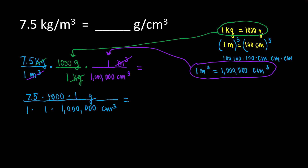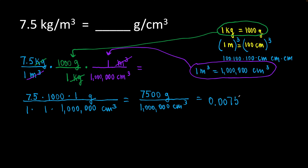Let's do the math. 7.5 times 1,000 gives us 7,500 grams over 1 times 1 times 1,000,000 cubic centimeters. Grab the calculator and divide the top number by the bottom: 7,500 divided by 1,000,000 gives you 0.0075 grams per centimeter cubic. So, 7.5 kilograms per meter cubic is equal to 0.0075 grams per centimeter cubic.